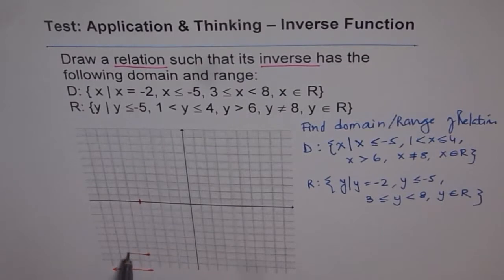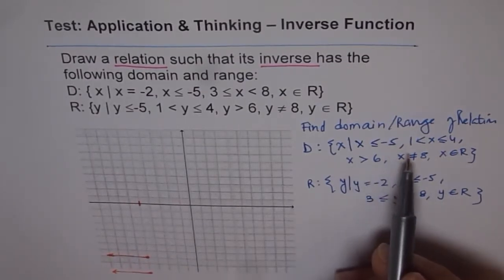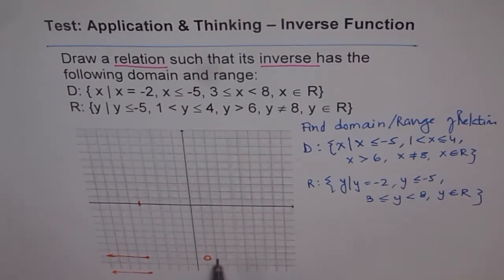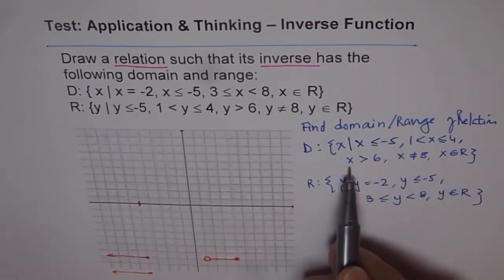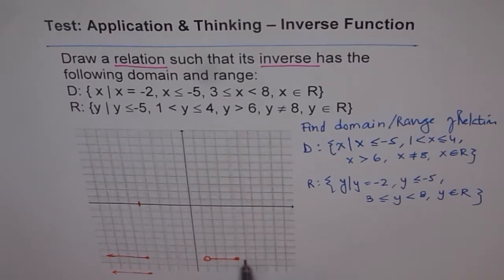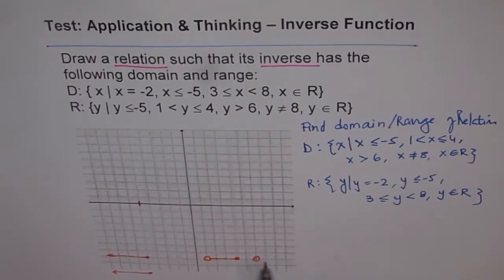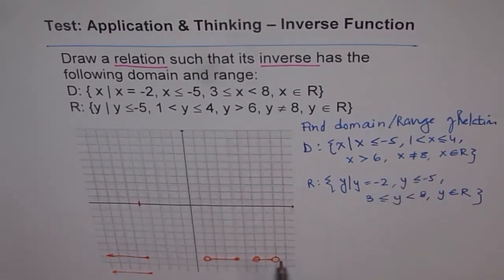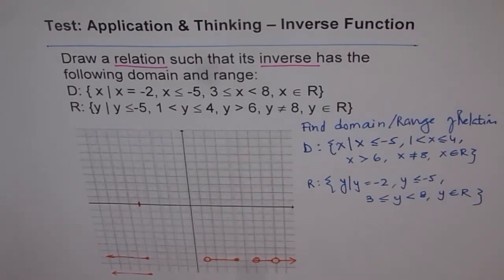Using the graph paper for rough work: the domain is also between 1 and 4, where 1 is not included but 4 is included. Then x is greater than 6, where 6 is not included — so we have a hole there. And 8 is not included, but everything else beyond 6 is included. The orange line in the horizontal gives the domain needed for the relation.